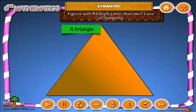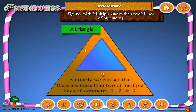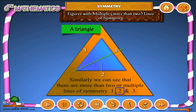A triangle. Similarly, we can see that there are more than two or multiple lines of symmetry — one, two, and three.